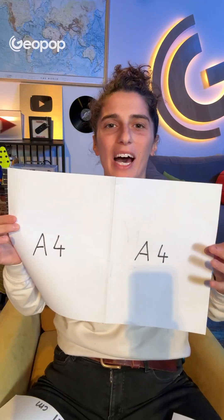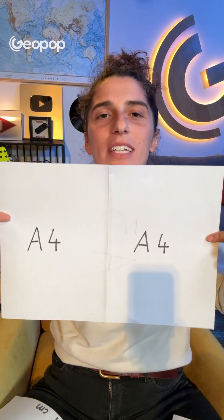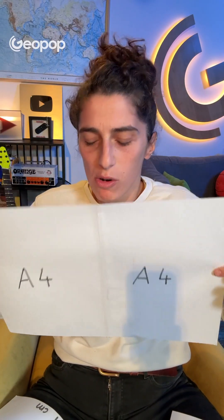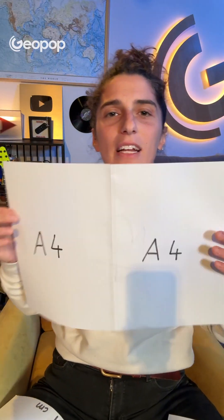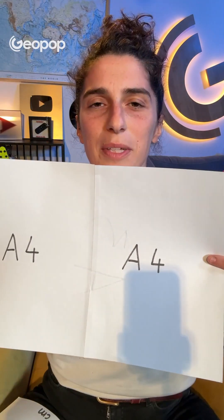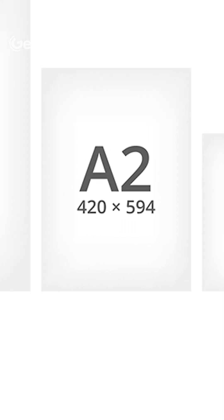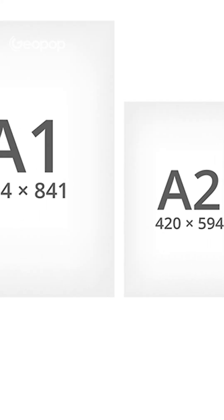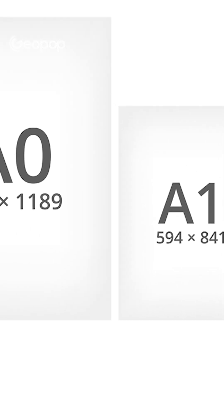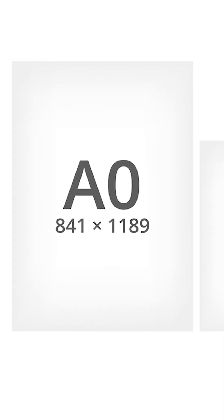Instead, if we double the size of the A4 by having two of them side by side, we get a sheet with double the area, but which still perfectly maintains the proportions of the original sheet. And what we've done is create an A3 sheet. We can go on doing this: doubling the A3 gives us an A2, doubling that again gives us an A1, and doubling once more gives us an A0 — all with the same proportions.